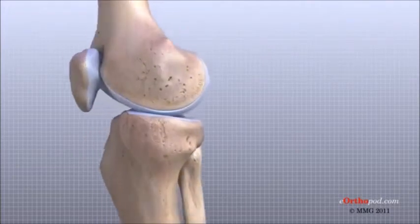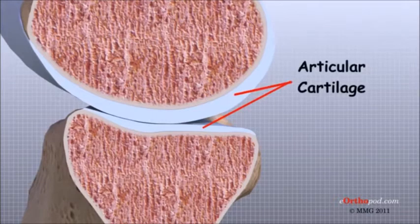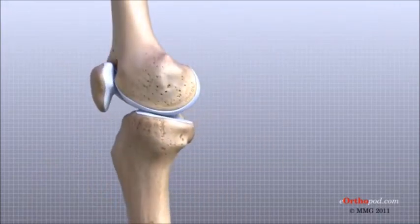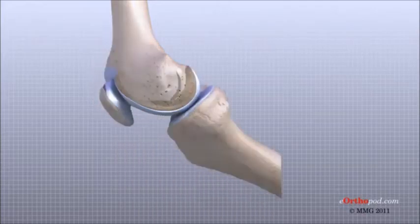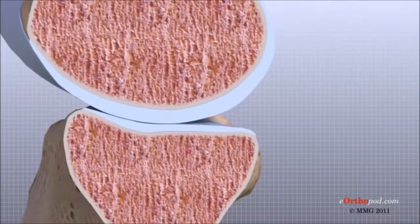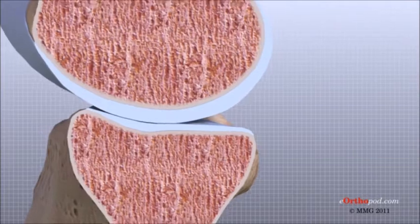Articular cartilage is the material that covers the ends of the bones of any joint. This material is about one quarter of an inch thick in most large joints. It is white and shiny with a rubbery consistency. Articular cartilage is a slippery substance that allows the surfaces to slide against one another without damage to either surface. Its function is to absorb shock and provide an extremely smooth surface to facilitate motion. In the knee, articular cartilage covers the ends of the femur, the top of the tibia, and the back of the patella.